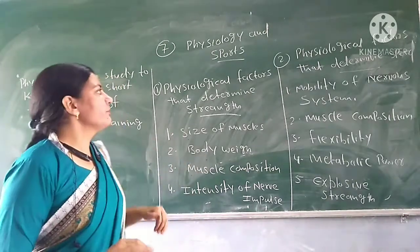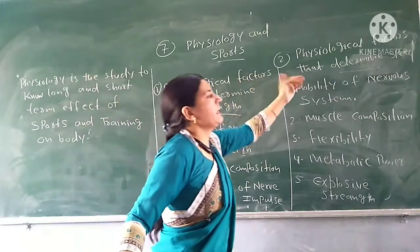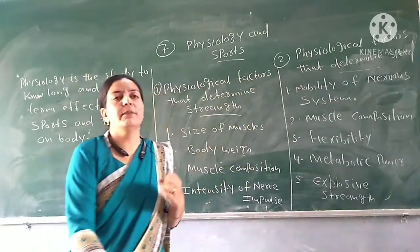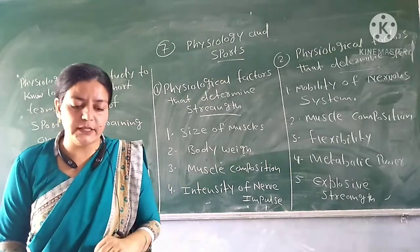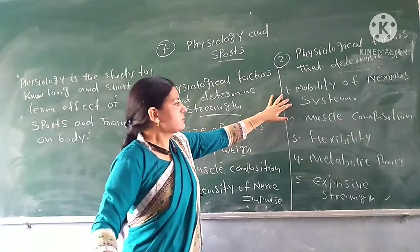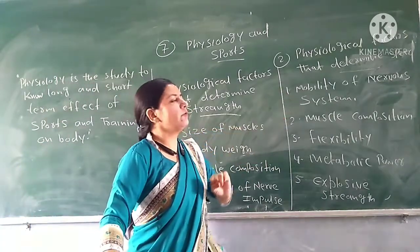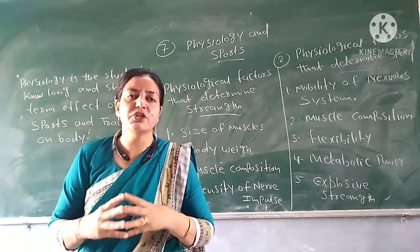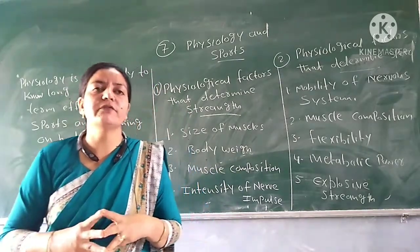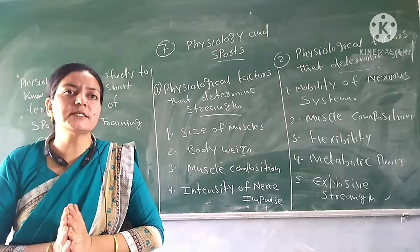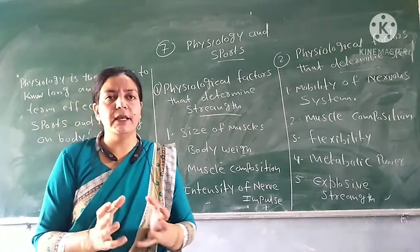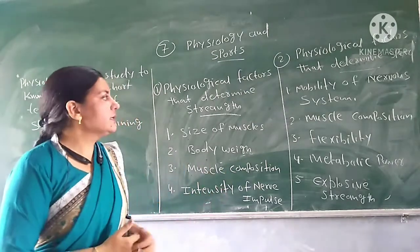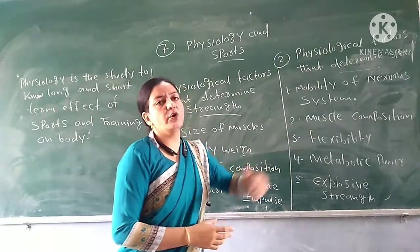Now let's talk about the physiological factors that determine speed. We will see which factors in our physiology and body determine our speed. The first is the mobility of the nervous system — the more mobile the nervous system, the more the muscles can expand and contract, and the greater the speed will be.